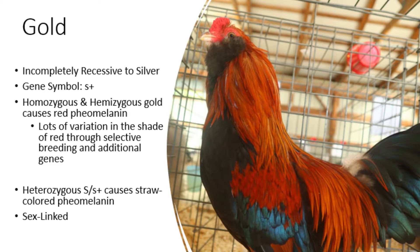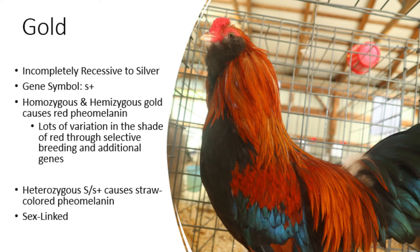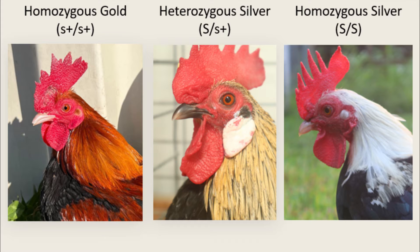The gold allele is recessive to silver and is denoted by a lowercase s-plus, with the plus sign representing that gold is the wild type allele found in red junglefowl. A variety of red or gold shades can be made depending on what other dilution or enhancement genes are present, including autosomal red. When a male is heterozygous for the silver and gold alleles, this normally comes out as a straw color, an intermediate between the two.